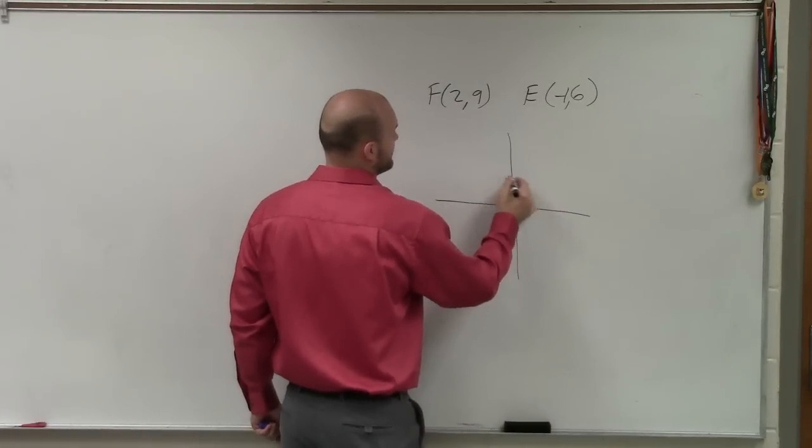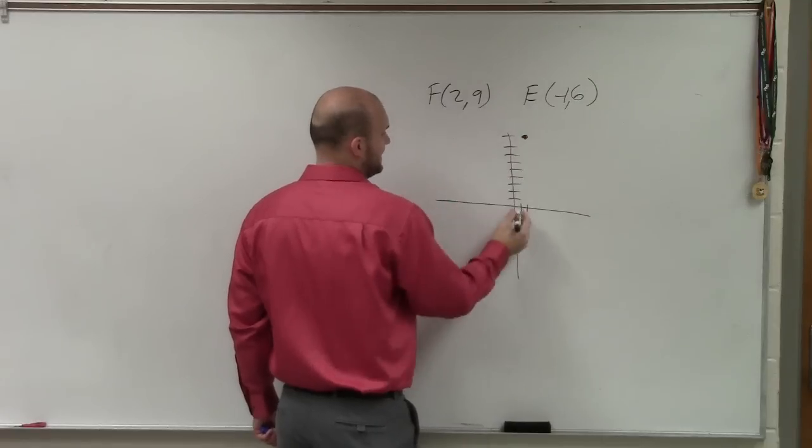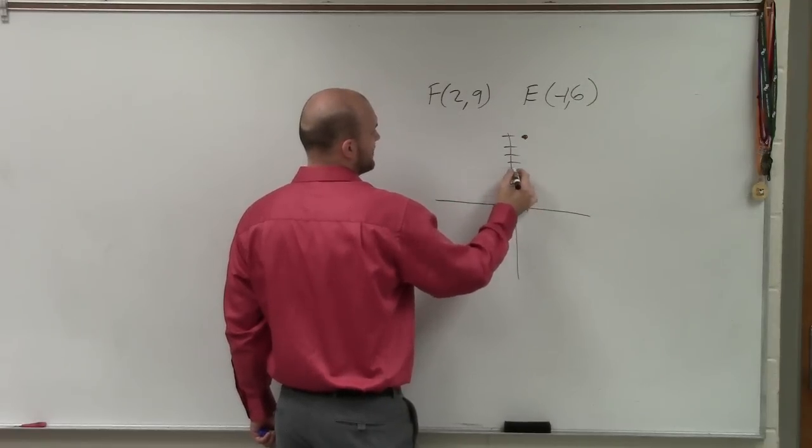I have 2, 9, 1, 2, 3, 4, 5, 6, 7, 8, 9. And then E is negative 1, 6, 1, 2, 3, 4, 5, 6.